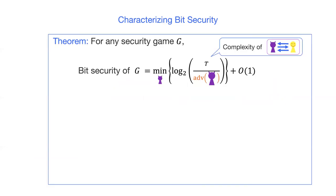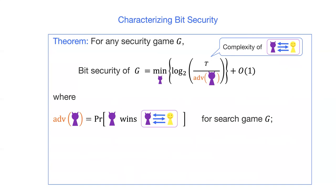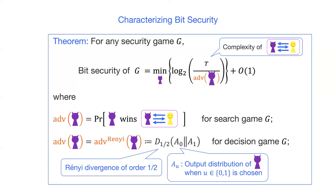We characterize our bit security in the following theorem. For any security game G, the bit security is equal to the minimum value of log base 2 of t over the advantage of the inner adversary. Namely, we can exclude the outer adversary, and the bit security can be evaluated by the inner adversary alone. For search games, the advantage is the winning probability of the adversary. For decision games, the advantage is called the learning advantage, which is equal to the Rényi divergence of order one-half between two distributions A_0 and A_1, where A_u is the output distribution of the inner adversary under the condition that u was chosen as the secret.